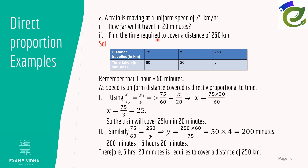For the second part, we need to find the time to cover 250 kilometers. Using 75/60 = 250/y and cross-multiplying gives y = 200 minutes. Converting to hours: 200 minutes = 3 hours 20 minutes, since 3 hours = 180 minutes with 20 minutes remaining. For objective questions you can observe simpler multiples, but cross multiplication is more reliable in general.